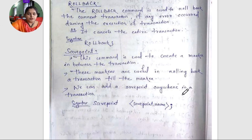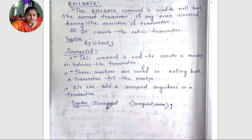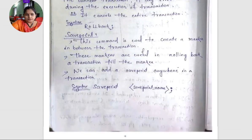We can add a savepoint anywhere in a transaction. If you create a savepoint, the syntax is: SAVEPOINT name semicolon.